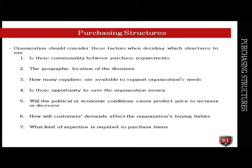The various types of purchasing structures — centralized, decentralized, line or staff, and hybrid — are all usable purchasing structures, each having advantages and disadvantages. Organizations can decide to follow one form of structure or choose to use multiple forms. The organization should consider these factors when deciding which structure to use: whether there is commonality between purchase requirements; the geographic location of the divisions; how many suppliers are available to support the organization's needs; whether there is opportunity to save the organization money; and whether political or economic conditions will cause product prices to increase or decrease. How will customers' demands affect the organization's buying habits?